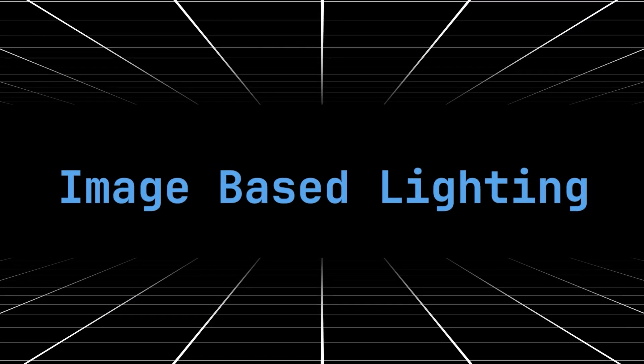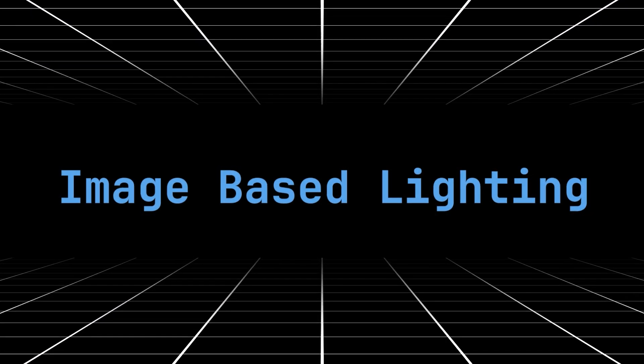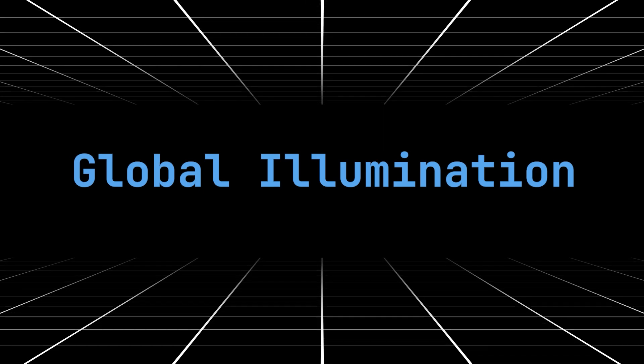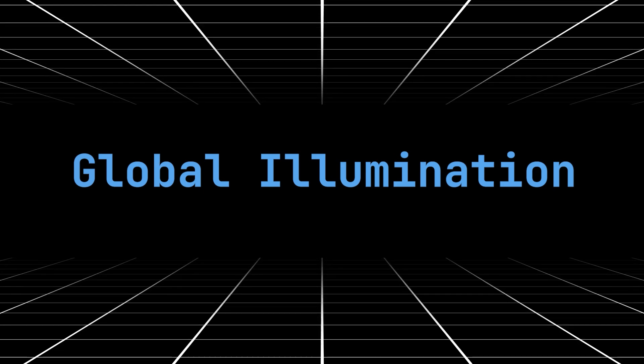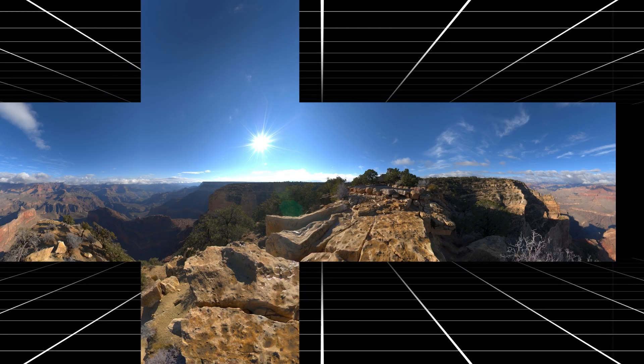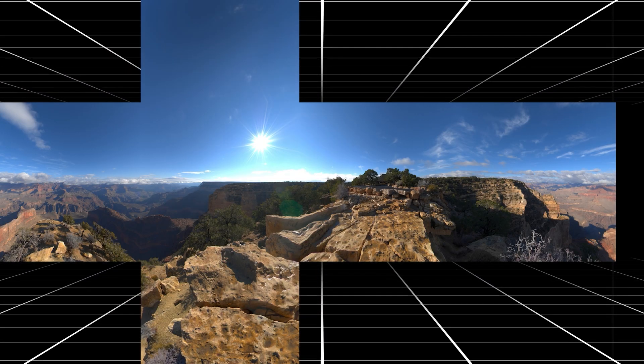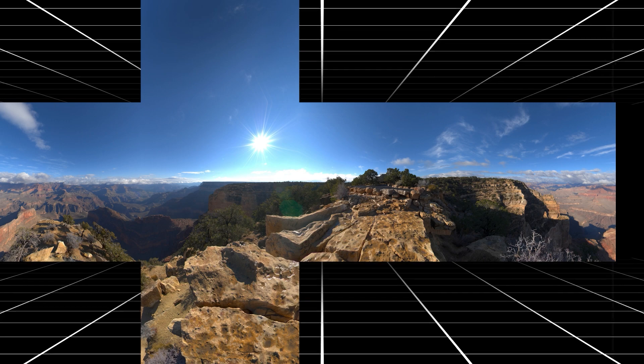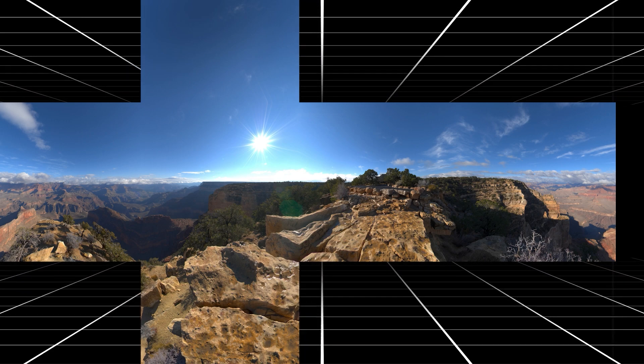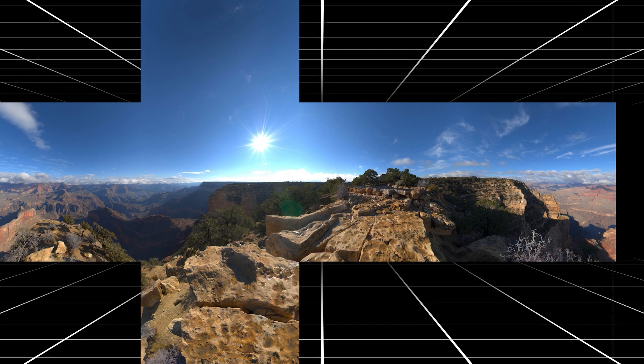Image based lighting is one of the simplest ways to simulate global illumination. Take a screenshot of the world in a cube-like pattern — we call this a cube map — then give it a position in the world, which we call a probe. We then blur the cube map (simplified explanation) and apply it during rendering.